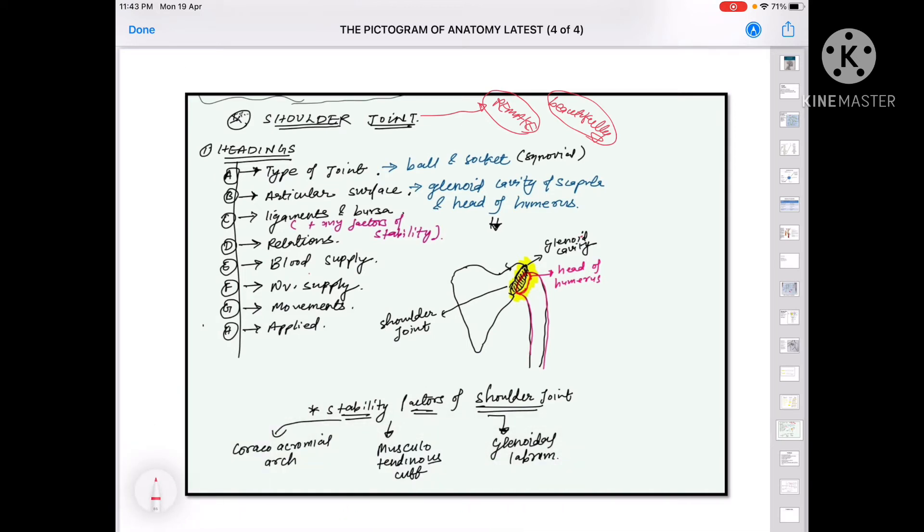Before discussing any joint we must know under which headings we have to describe that joint. From now onwards, whenever anyone asks you about a joint, answer in such headings: First, the type of joint, the articular surface, the ligaments and bursa, the relations of that joint, blood supply, nerve supply, the movements which that joint facilitates, and at last, applied anatomy. When we give the description of any joint in such headings, it becomes easier for the other person to understand and it makes a sense of clearness about the topic.